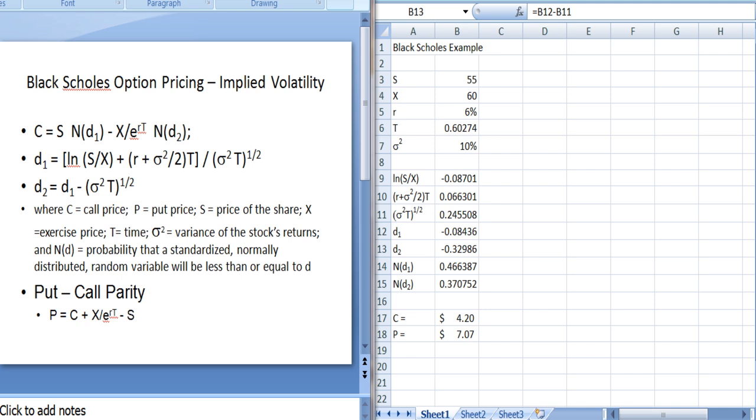In a previous video I talked about the Black-Scholes option pricing model. The Black-Scholes model prices a European call option. Now a call option gives the holder the right but not the obligation to buy the stock at the specified price known as the exercise price. And a European style option is one that can only be exercised on the expiration date.